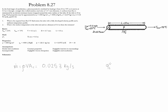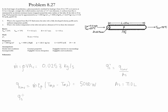The heat flux that enters into the system has to be equal to the convection heat transfer divided by the surface area in contact with the fluid. The convection is equal to ṁCp times the difference between the mean exit temperature and the mean inlet temperature, which equals 5060 watts. The surface area is pi·D·L, giving a heat flux of 12682 watts per meter squared.